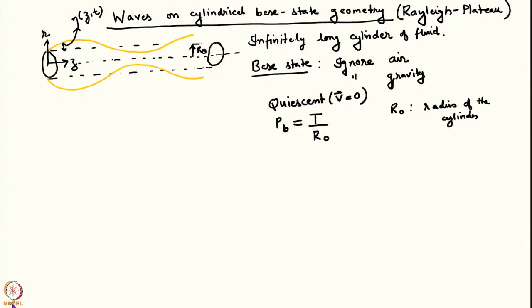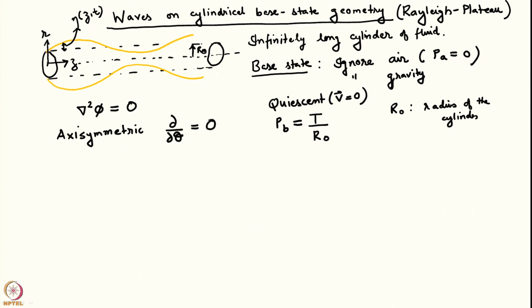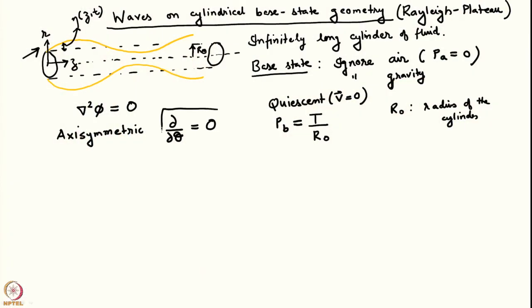Like usual, we will use the Laplace equation to represent the perturbation velocity potential. The pressure in air is assumed to be 0. We are also going to make the approximation that our perturbations are axisymmetric, so all derivatives with respect to theta are going to be 0. Note that I am using a cylindrical coordinate system here — the radial coordinate and the horizontal axial coordinate along the length of the cylinder — and all quantities will be independent of theta.